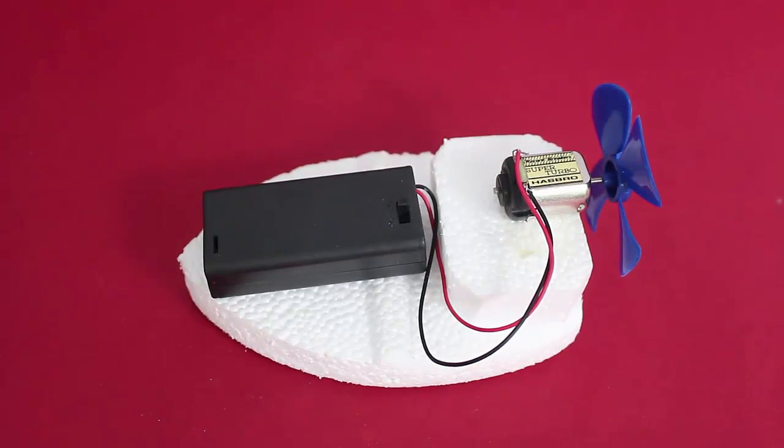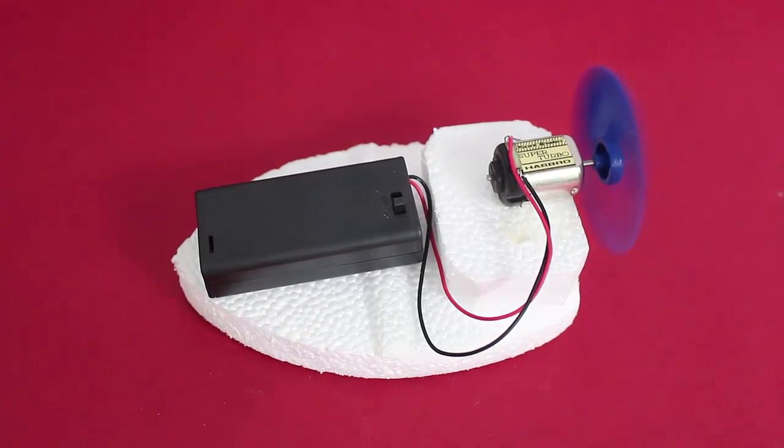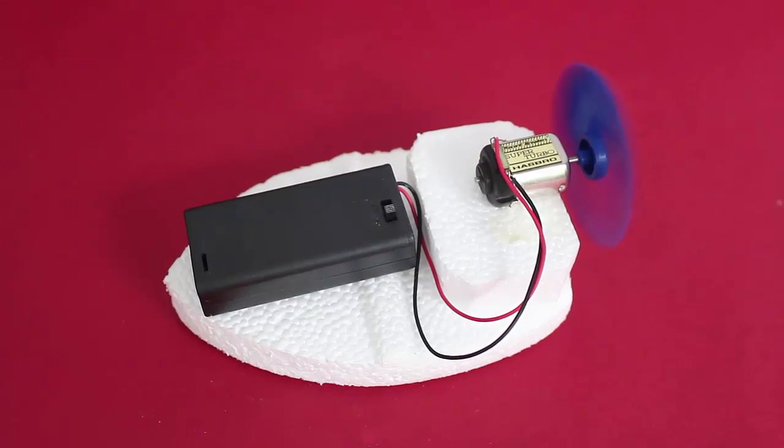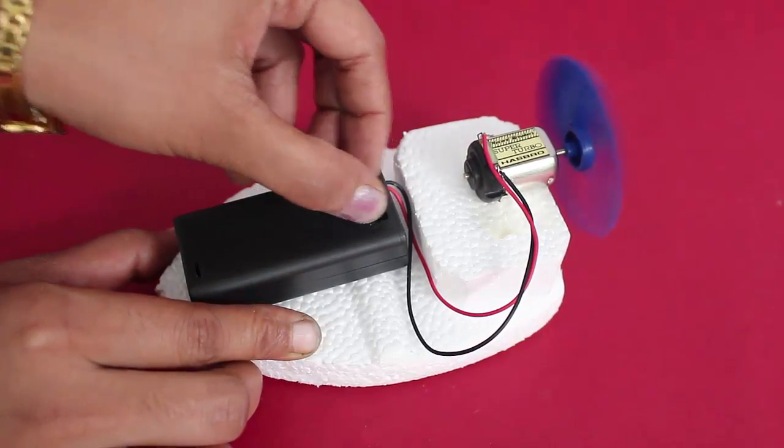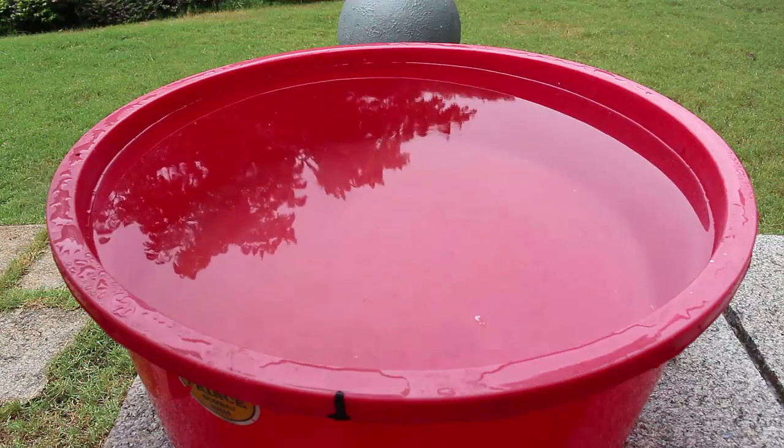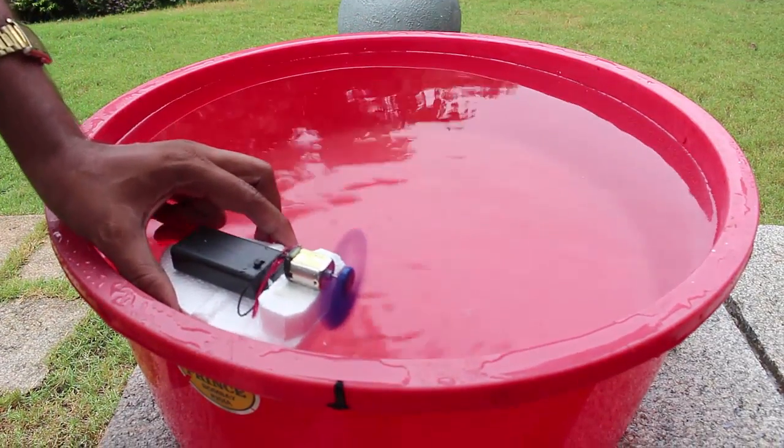Now the motor boat is ready for its maiden launch. If you switch it on, the fan spins very fast and of course the boat will vibrate because it is kept on a table. Put the switch off and now place it in a tub of water and put the switch on.